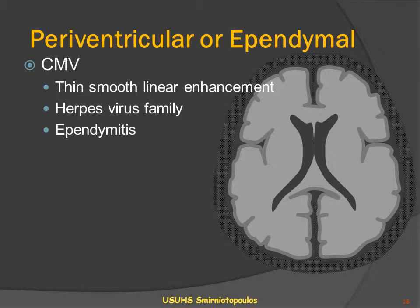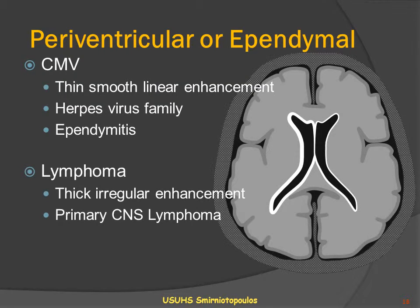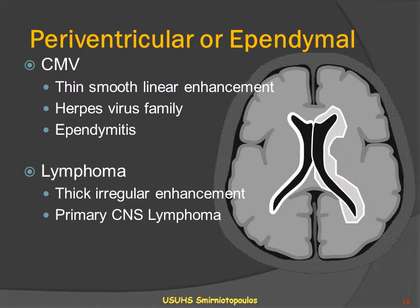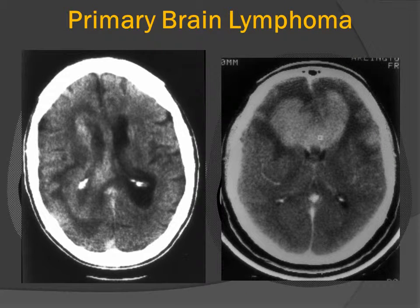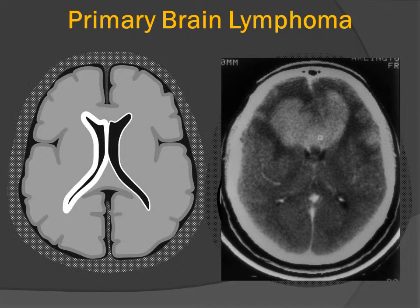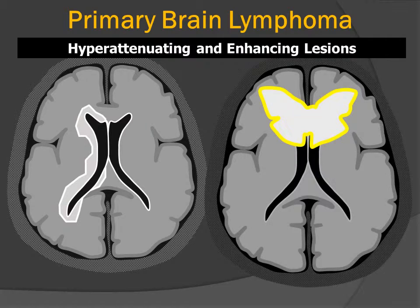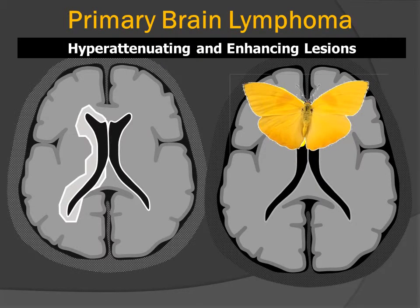Other periventricular lesions include cytomegalovirus, CMV, which typically gives a very thin line of periventricular enhancement by producing an inflammation of the ependyma itself — ependymitis. In contrast, CNS lymphoma will give a thick periventricular area of abnormality and enhancement, and oftentimes a very irregular rind around the ventricles. These two processes, CMV ependymitis and lymphoma, are usually distinguishable on imaging characteristics. Primary CNS lymphoma shows abnormal hyperattenuation surrounding the ventricle, and the classic butterfly appearance for a lesion involving the corpus callosum.